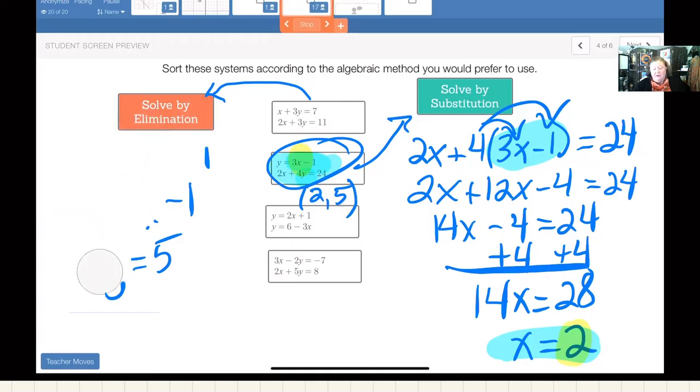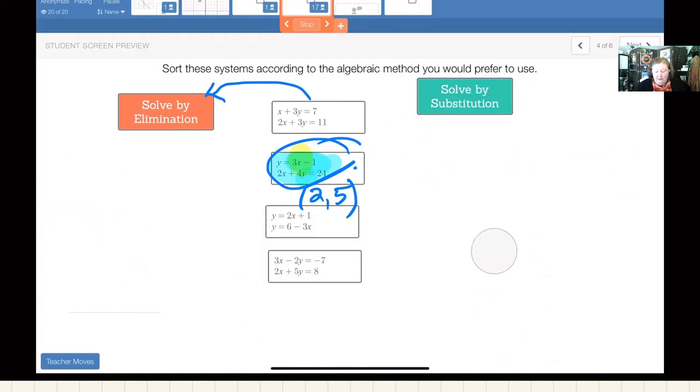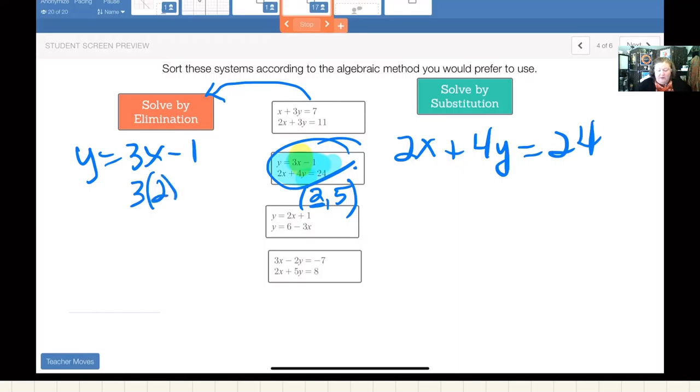Now, one step further before I talk to you about elimination, I want to go back to how do I check and make sure that this works. Well, I'm going to keep this y equals 3x minus 1 on this side, and the 2x plus 4y equals 24 on the right. And I'm going to take this 2 and put it into both equations where the x is. 3 times 2 minus 1, 2 times 2. And I'm going to put the 5 where the y is.